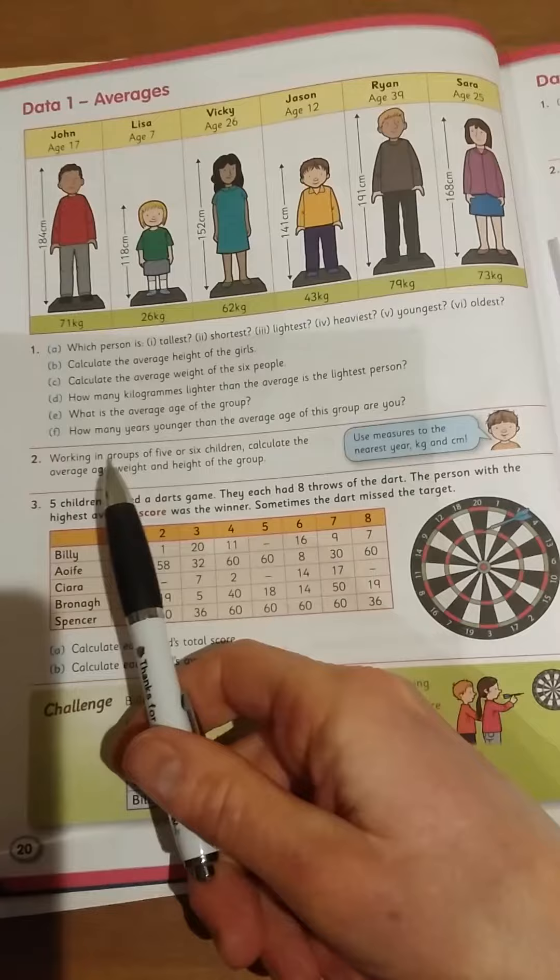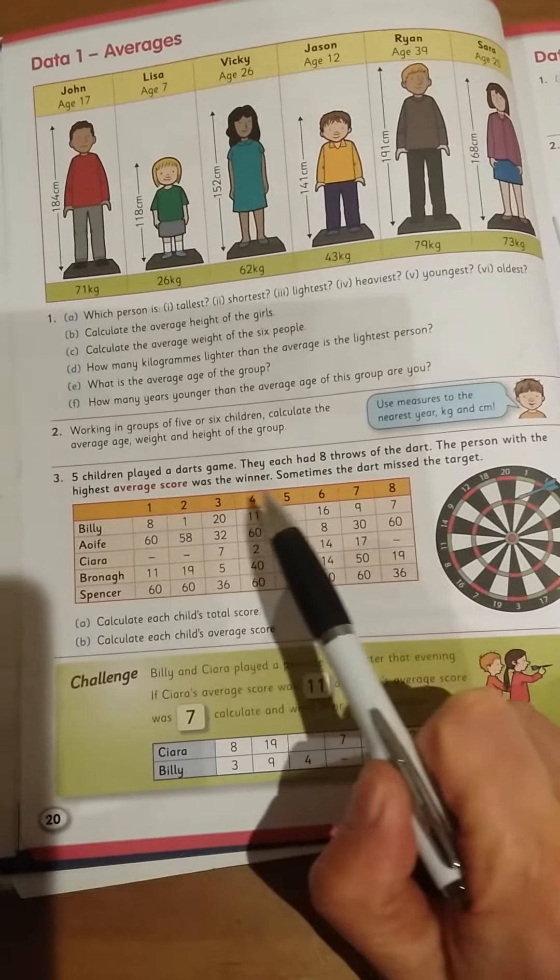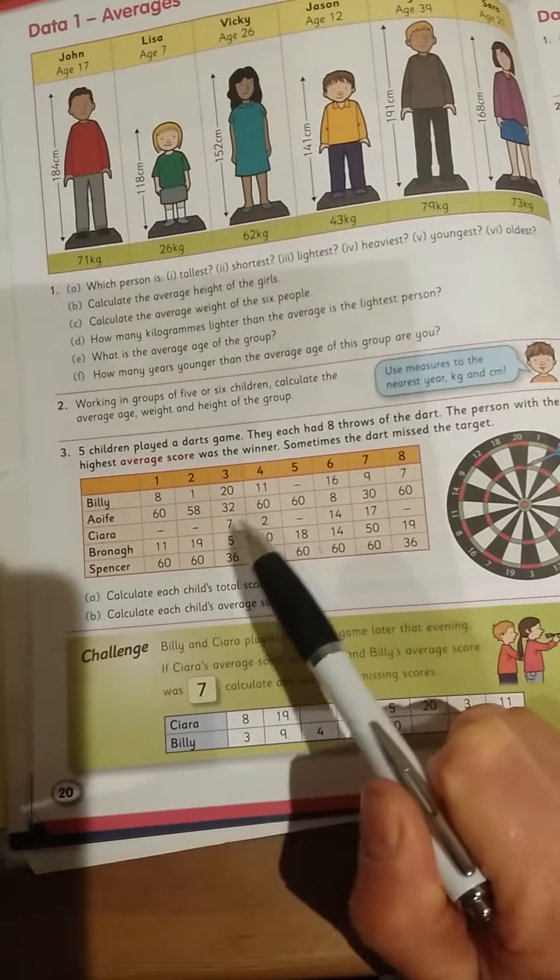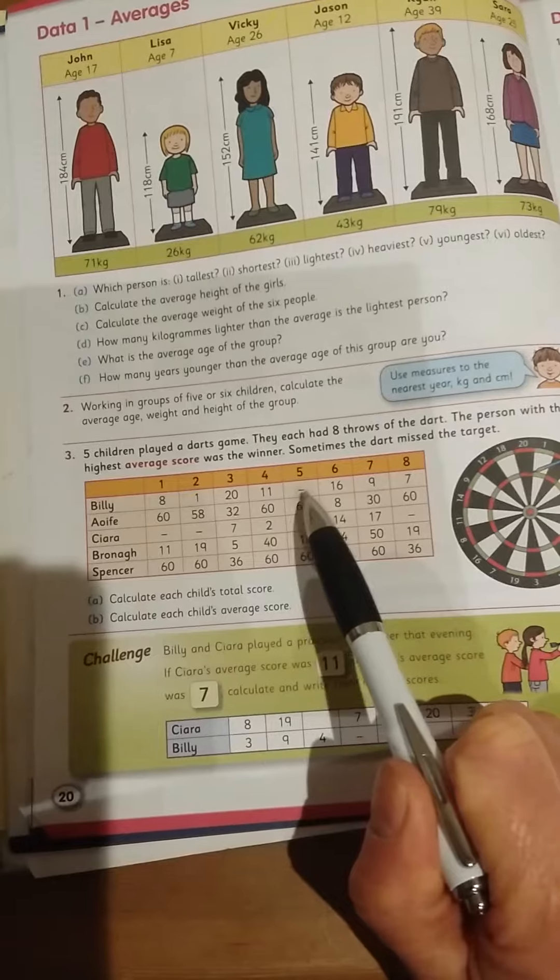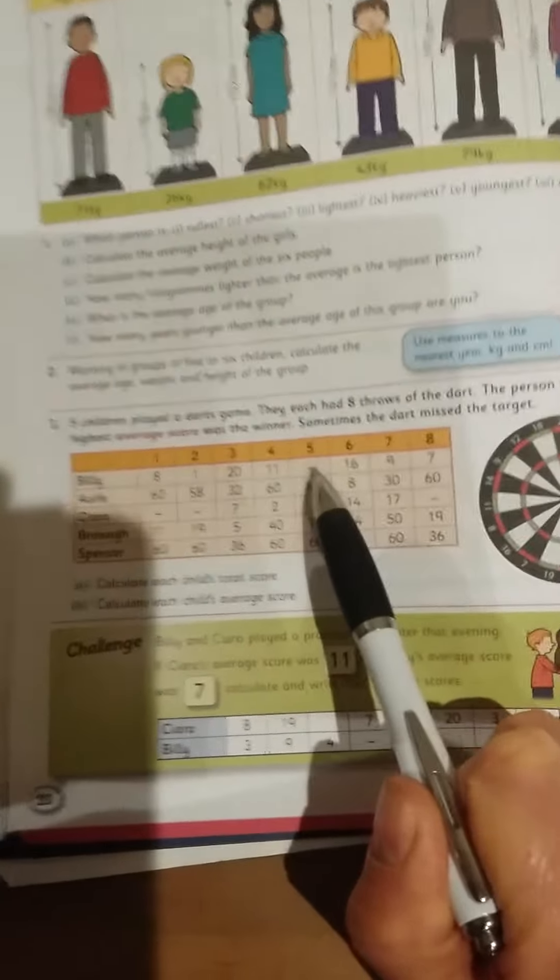Now, you won't be able to do question 2. Question 5: children played a darts game. The person with the highest average score was the winner. Sometimes the dart missed the target. So let's see here, if there's a little line, a little kind of minus line, that just means they didn't hit the target at all. So they don't get any score for that.